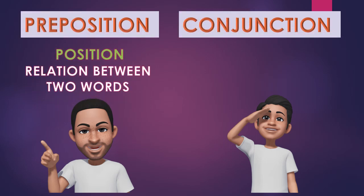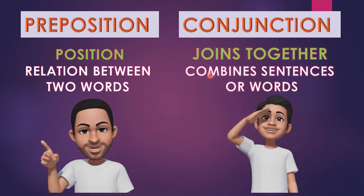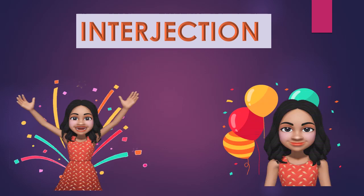In this family there are two servants: Preposition and Conjunction. Preposition is the chief servant — he always denotes the position, that is, the relationship between two words in a sentence. Conjunction is the family servant who looks after every member and combines everything together — whether it is a word, phrase, or clause. So conjunction is a word which joins words, phrases, clauses, or sentences together.